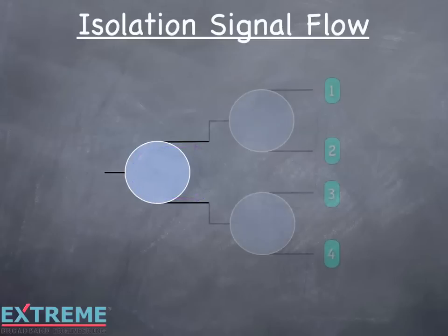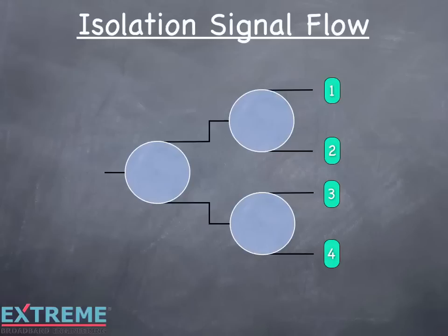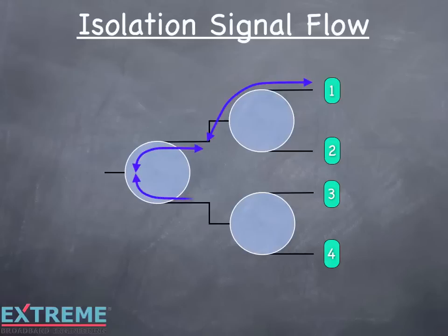Now let's look at a four-way splitter, which has additional isolation paths. From port 1 to 2, and from port 3 to 4, the signal flows through the isolation path of the internal splitters. Another path is from port 1 to port 4 — the signal flows through the first internal splitter's insertion loss, through the isolation path of the next internal two-way, and through the insertion loss leg of the next internal two-way splitter. Since the signal flows through the isolation path of one internal splitter and the insertion loss of the other two internal splitters, the isolation loss of this path is greater by 7 dB than from port 1 to 2, or port 3 to 4.